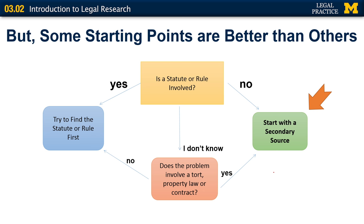As a rule, particularly for novice researchers, you can't go wrong starting with a secondary source. The secondary source will give you a wealth of information — background, context, specific legal terms — but also cross-references to the necessary primary law. If, however, you know a statute or rule is involved, such as a rule of civil procedure, I suggest starting by searching for that statute or rule directly, because once you find it, the annotations and cross-references will give you a lot of pertinent information, including secondary sources, case law, regulations, and more.